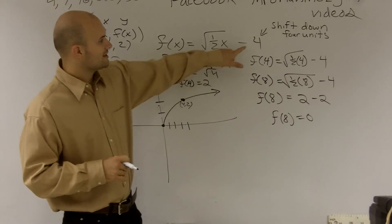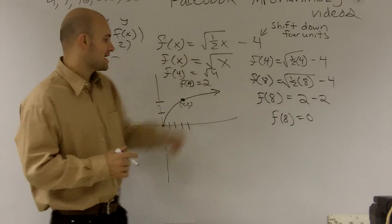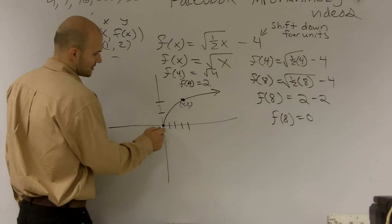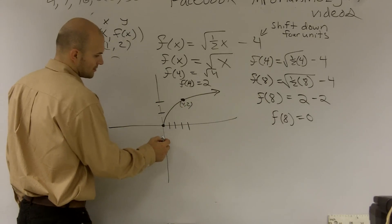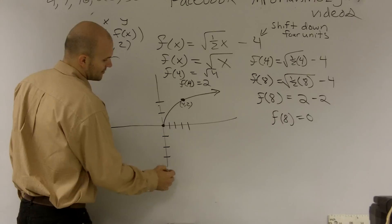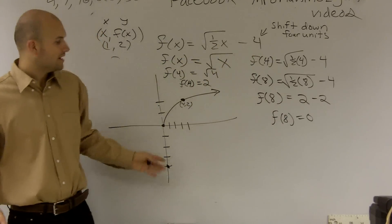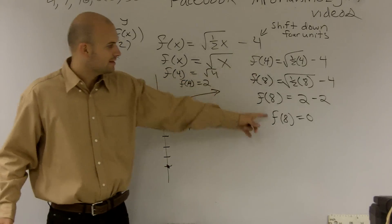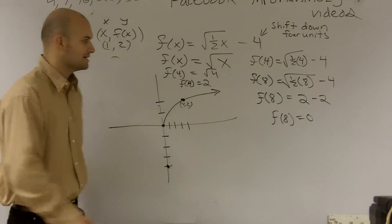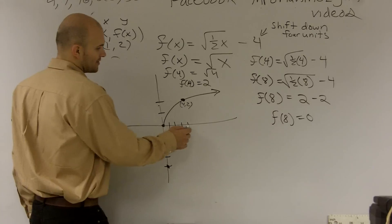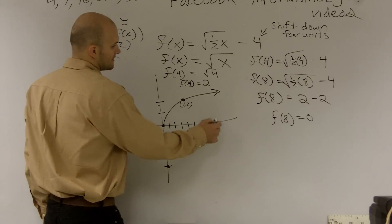But we know that this shift negative 4 is going to take us down negative 4. So we're going to shift this whole graph down 4. So 1, 2, 3, 4. Okay? Because it says shift the graph down 4. And then now my new point is at f of 8 you get 0. So 1, 2, 3, 4, 5, 6, 7, 8.